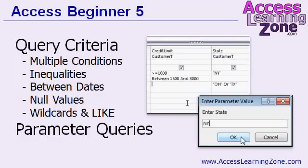This is just one of the many topics that I cover in my Access 2010 Beginner Level 5 class. We focus most of the class on learning about query criteria. We talk about multiple conditions, ands and ors, inequalities, looking for records between dates like I just talked about. There's lots more to learn about it too — I talk about null values, the is null and is not null keywords.